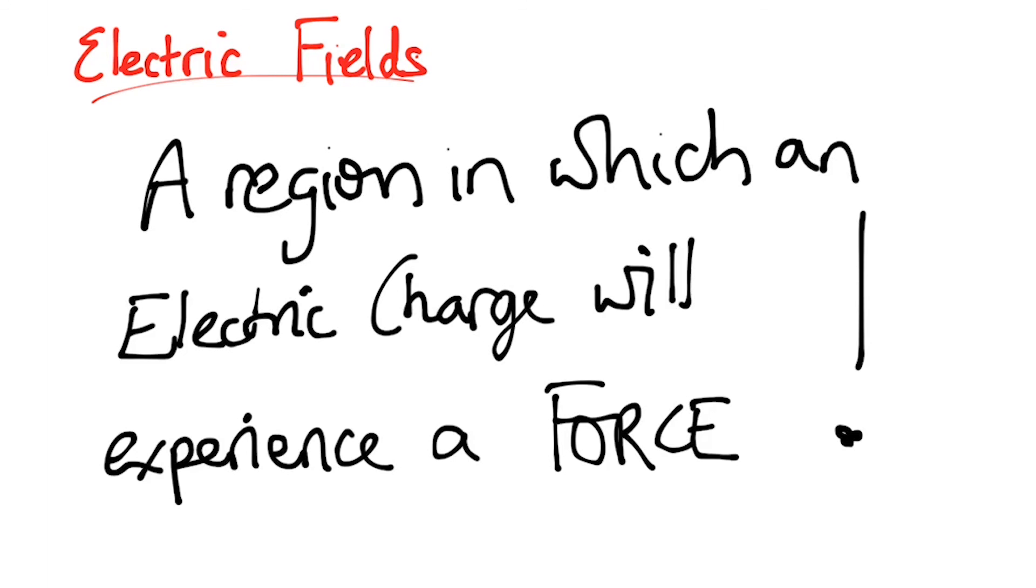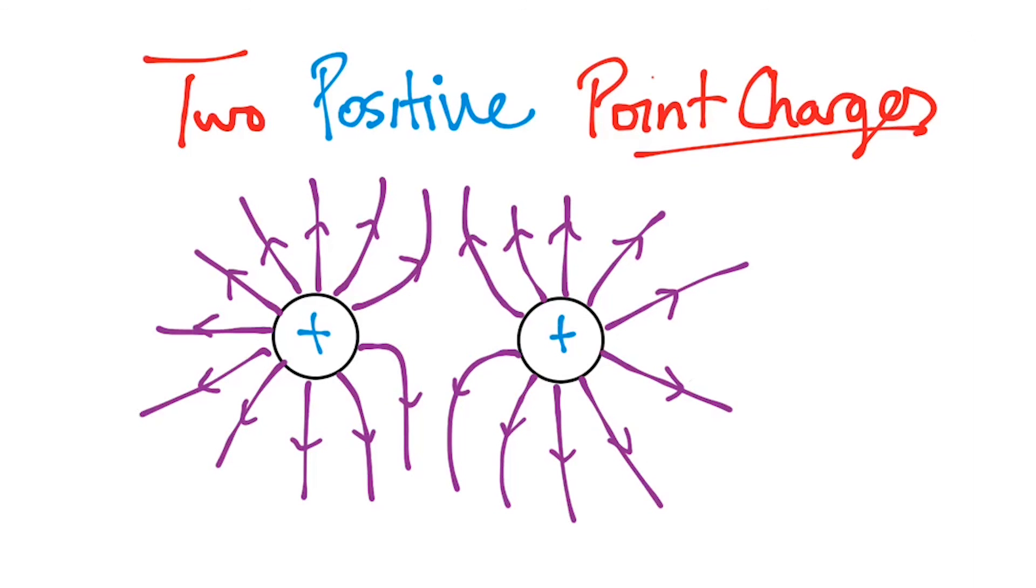So we are nearly finished. We just need to learn about electric fields, which is a region in which an electric charge will experience a force. We call these point charges. So imagine if you have a point negative charge here and a point negative charge here. What is going to happen? How is the field going to look? You need to learn how the fields look. Well, this is how the field is going to look. Okay, I'm just kidding. Well, actually, this is what you need to know.